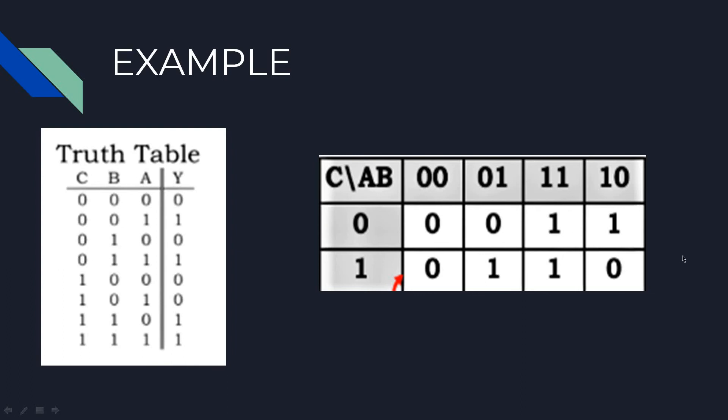Now to get the expression, we pair 2 ones. So we pair these both and we pair these both. We shouldn't pair these 2 ones because then we'll be missing out this one and this one. So we pair these both and these both to satisfy the prime implicant condition.